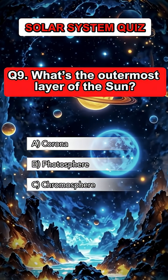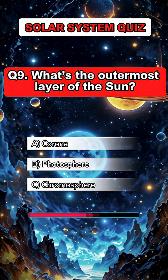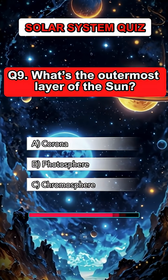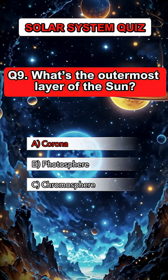Question 9. What's the outermost layer of the Sun? Answer A. Corona.